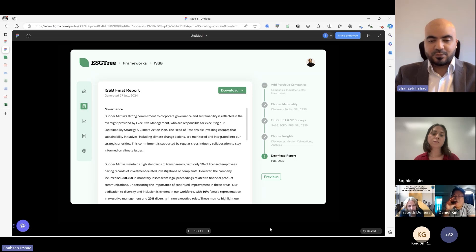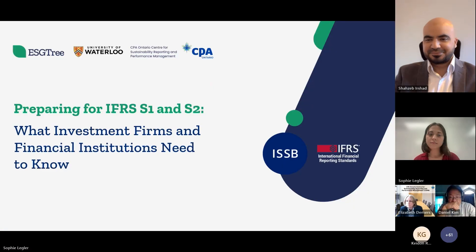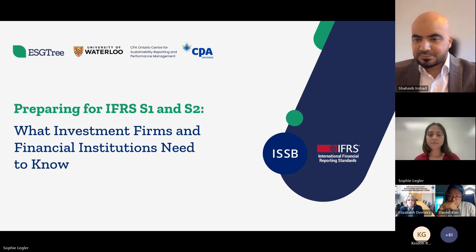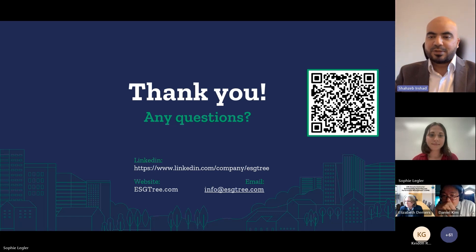This was a fairly quick overview of ISSB in general, the implementation timelines, and the process for applying the disclosures. We're really grateful for the support of CSPM here, supported by CPO Ontario. It would be great to take questions from the audience. One question: how can financial institutions integrate ISSB-aligned sustainability data with existing financial reporting systems without duplicating efforts?